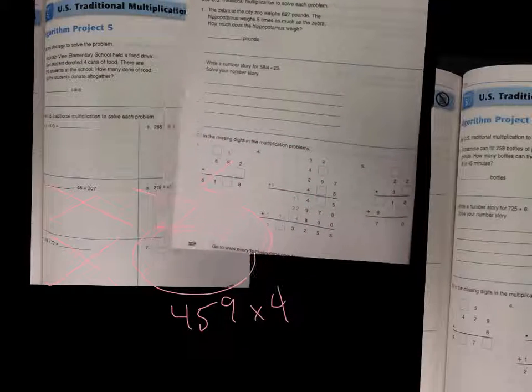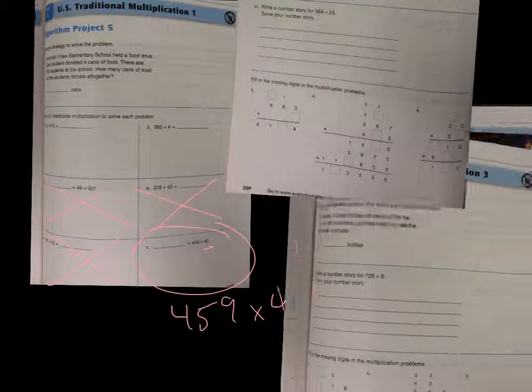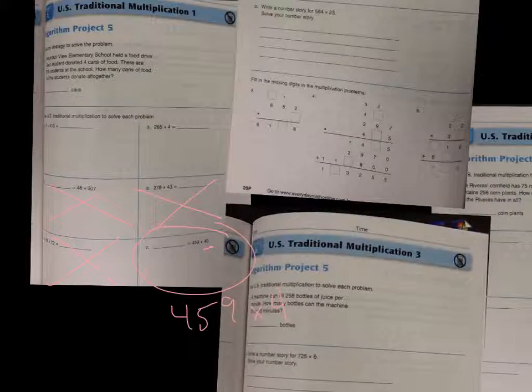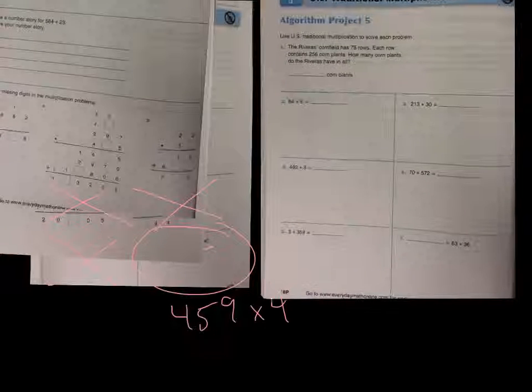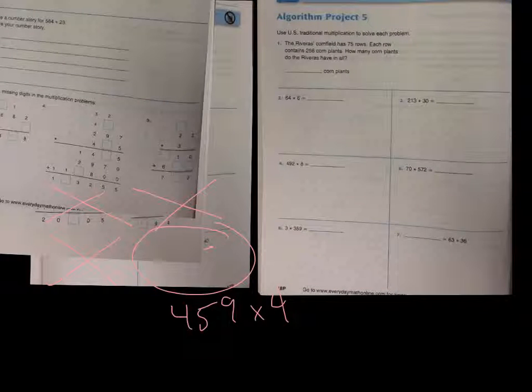Here's your next page. So you have some numbers to fill in. Another page that looks very similar. And your last page. So you usually have a story problem up top. And again, skip any that multiplied by a 2-digit number.